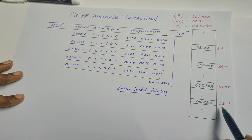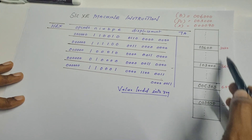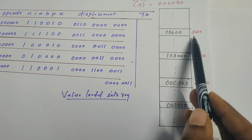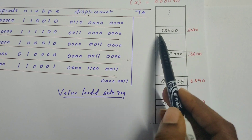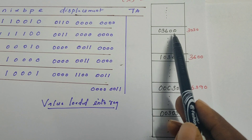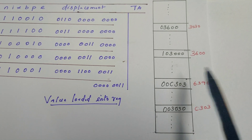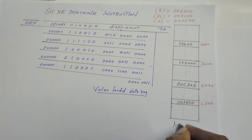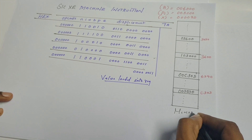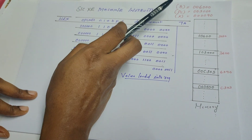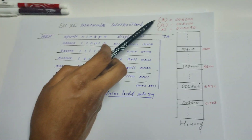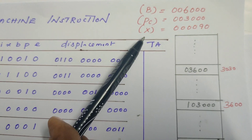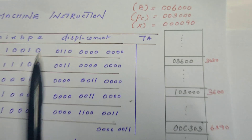This is the structure of the memory, showing memory addresses and the corresponding data at each location. For example, at address 3030 the data available is 03600. Apart from the memory, the content of the base register, the program counter, and the index register are also given.